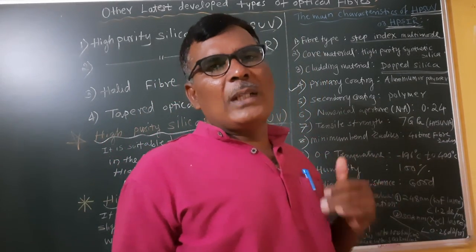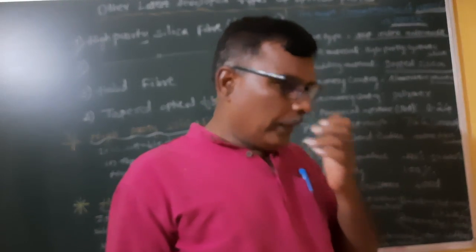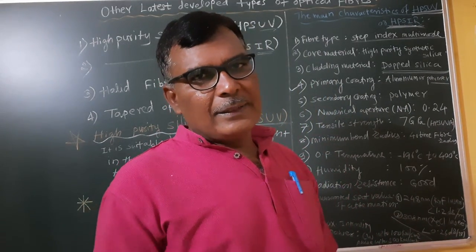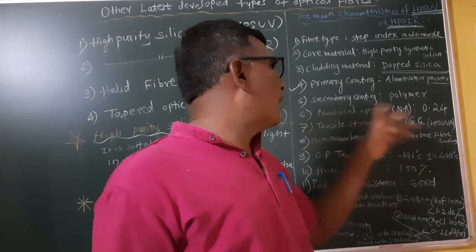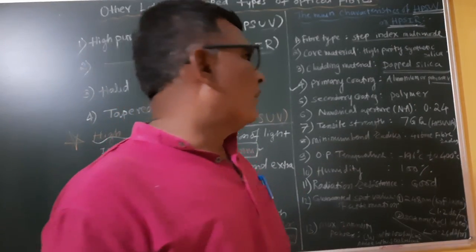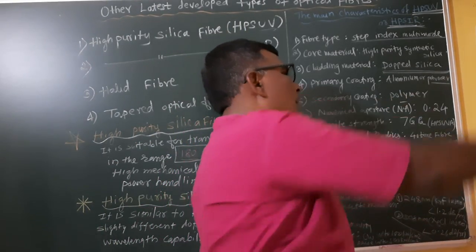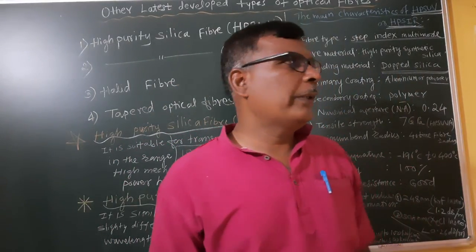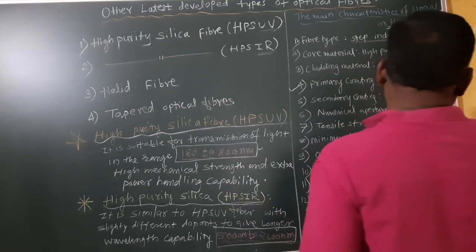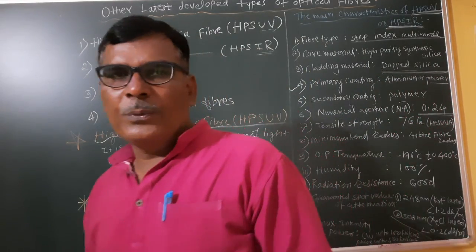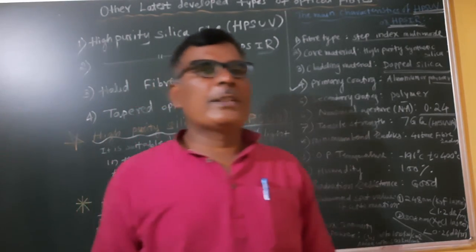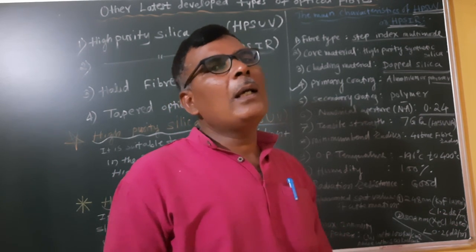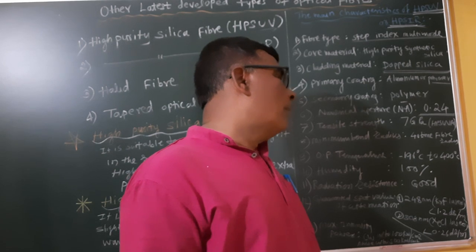The fourth characteristic is the primary coating, which is aluminum or polymer. While polymer is the basic material, using aluminum increases the strength of the material. So primary coating is aluminum or polymer. The fifth characteristic is secondary coating, which is purely polymer. The sixth characteristic is the numerical aperture, which is 0.24. A multiple choice question may ask the numerical aperture for HPSUV or HPSIR — it is 0.24.